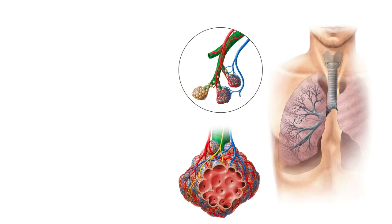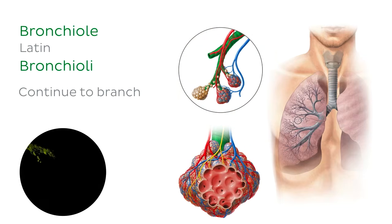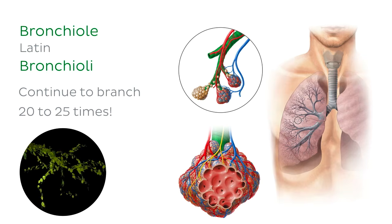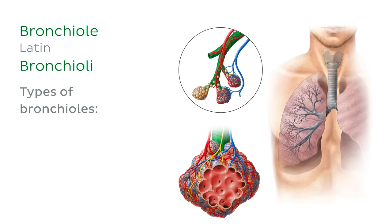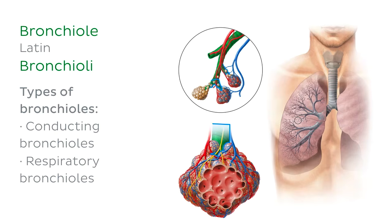Beyond the tertiary bronchi, branches are called bronchioles. Bronchioles can continue to branch 20 to 25 times before we reach the end, and they continue to be a conduit for air to travel into and out of the body. There are a few different types of bronchioles. Ones that terminate as smaller bronchioles and just help to transport air are called conducting bronchioles, and bronchioles that terminate with alveoli and also transport air are called respiratory bronchioles.